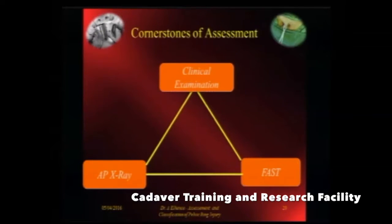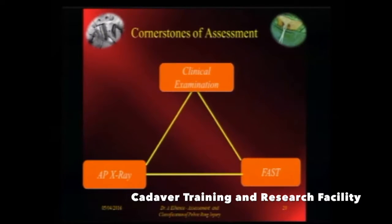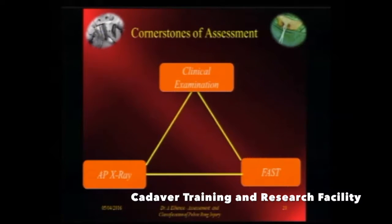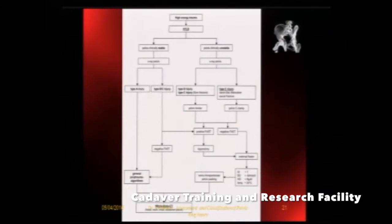The cornerstones of assessment of a pelvic injury are: first, a gentle thorough clinical examination — it has to be gentle and not repetitive — to determine if there is anteroposterior instability and medial-lateral instability. Second, you have to do an AP X-ray of the pelvis and an abdominal ultrasound to determine whether there is an abdominal bleed. That is the algorithm.